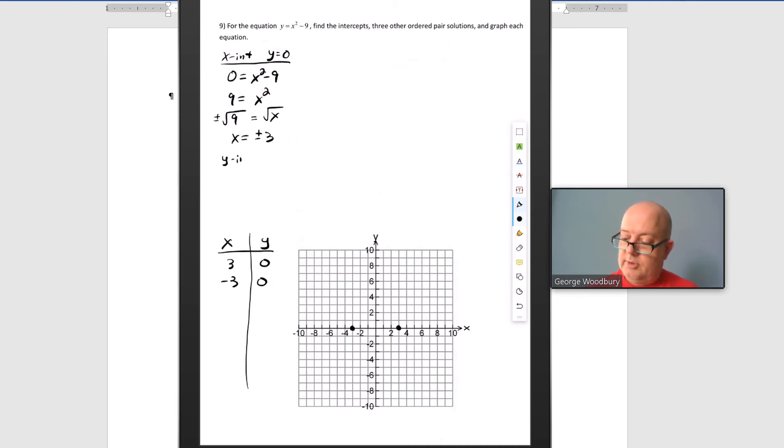The y-intercept, which is where x is 0, it's going to be y equals 0 squared minus 9. That's simply negative 9. So 0, negative 9, that is the y-intercept.